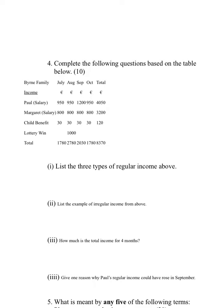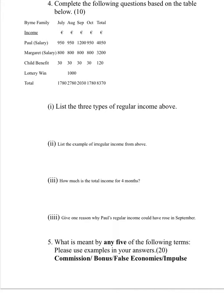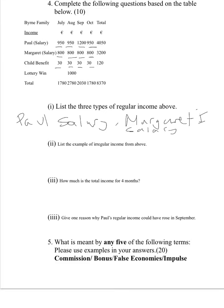In this question, we are asked to complete questions based on the table below for the Byrne family. The first question asks us to list the three types of regular income. The first one that's regular is Paul's salary — it's 950 every month. The second one will be Margaret's salary at 800 every month. And the last one will be child benefit, because we receive it every single month.